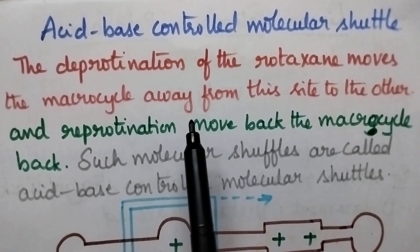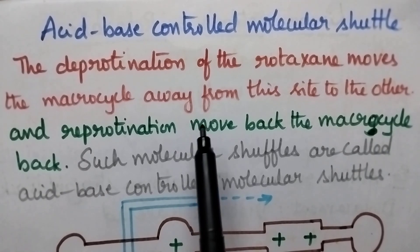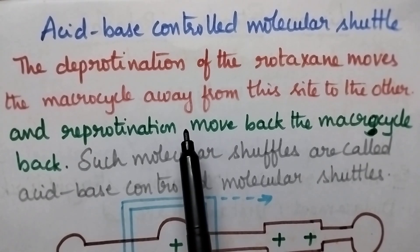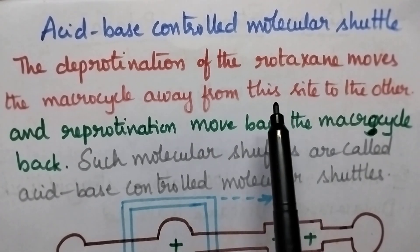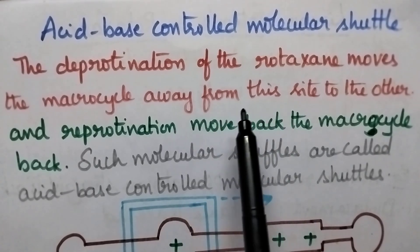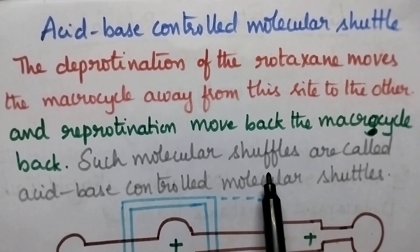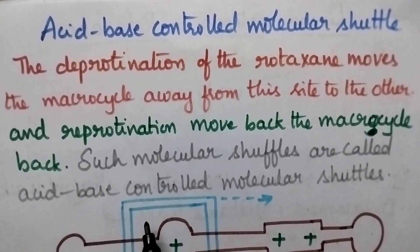We will consider rotaxanes. The macro cycle can be moved from one position to another through deprotonation or reprotonation. Such molecular shuttles are called acid-base controlled molecular shuttles.